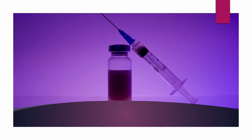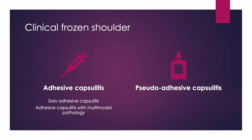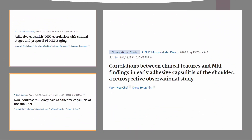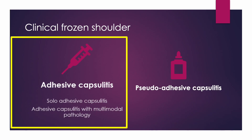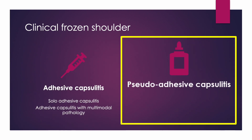I believe that the two pathologies are separate entities and innocent bystanders. So I'll treat the adhesive capsulitis if the symptom is a painful capsular limitation. I'll classify clinical frozen shoulder into adhesive capsulitis and pseudo-adhesive capsulitis. Usually, I finalize the decision according to the MRI findings. Adhesive capsulitis could be solo or accompanied by other pathologies.